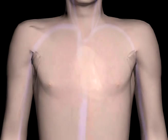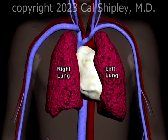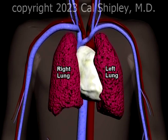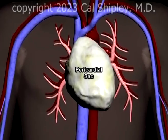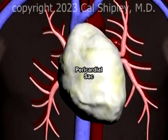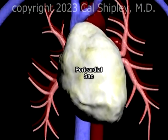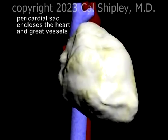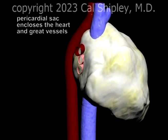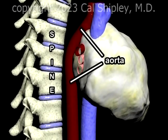The heart is positioned in the chest between the left and right lung and is enclosed by the pericardial sac. In addition to the heart, the pericardial sac encloses the distal portions of the great vessels — the superior and inferior vena cava and the aorta. The thoracic spine lies directly behind, or posterior to, the aorta.